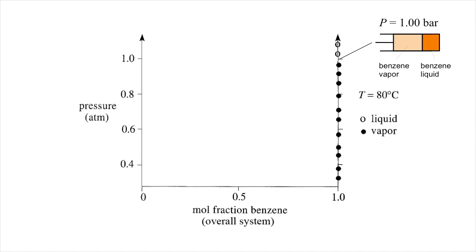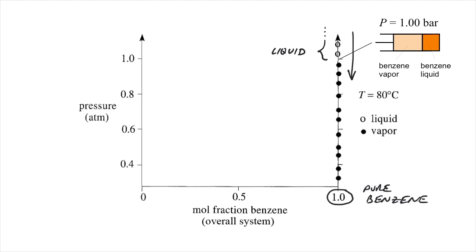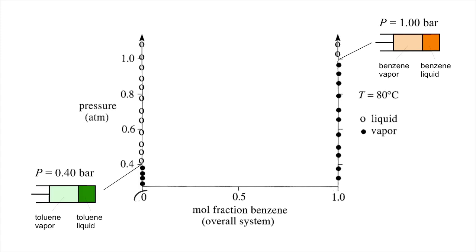Returning to the axes of our phase diagram, we can summarize these results by placing data points indicating the presence of liquid or gas at a given pressure and composition. In this case, all the data points sit on the vertical axis at xB equals 1, corresponding to pure benzene. As we lower the pressure, the system remains a liquid until p equals 1 atmosphere, at which point it splits into two phases. It remains this way until the pressure drops below 1 atmosphere, at which point we only observe a gas. Repeating this experiment for pure toluene, the saturation pressure of toluene is only 0.4 bar at 80 degrees C, so the same transition would occur at a lower pressure.